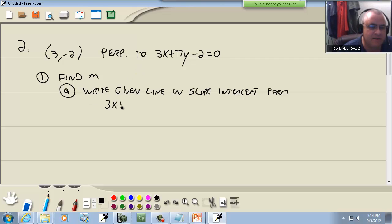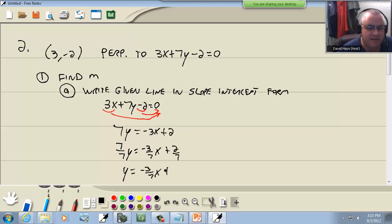We want to solve for Y, so take negative 2 to the right side and take 3X to the right side. So we've got 7Y equals negative 3X plus 2. Then divide everything by 7, and we get Y equals negative 3/7 X plus 2/7.